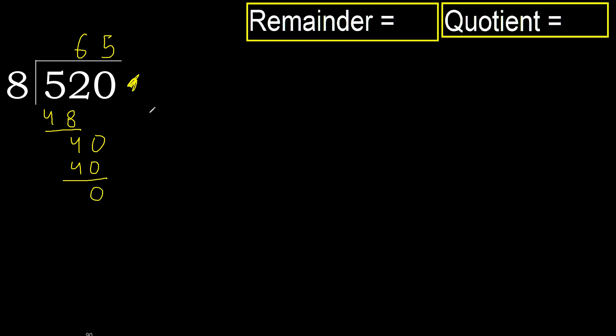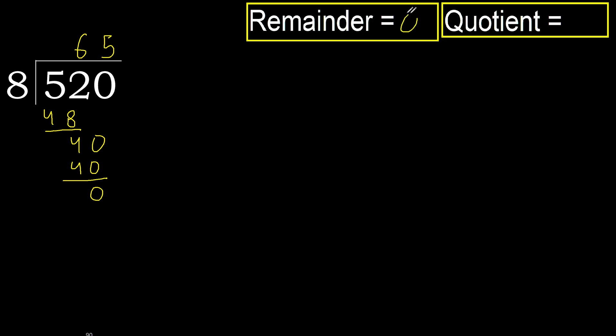There is no remainder, therefore we are finished. 520 divided by 8 is 65.